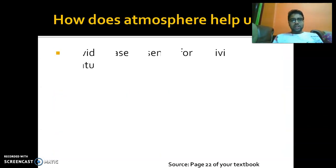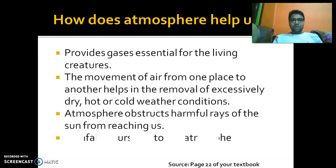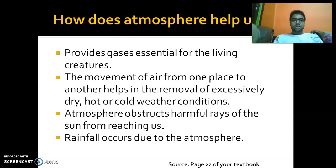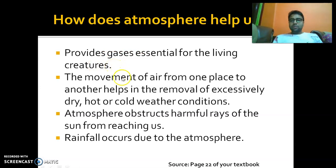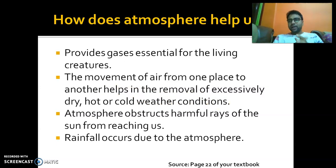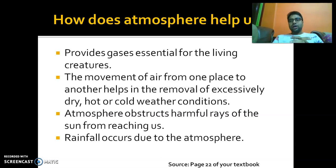Today let us look at how the atmosphere helps us. Life would not have been possible on earth if there was no atmosphere. The atmosphere provides gases that are essential for our living, including oxygen, which is why life is possible on earth. The movement of air from one place to another helps in removing excessive dry conditions, bringing in moisture. Rainfall is also caused due to the atmosphere.